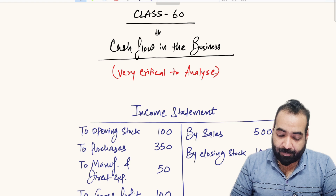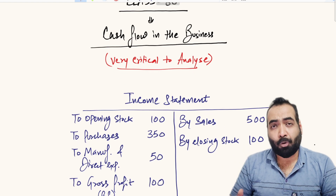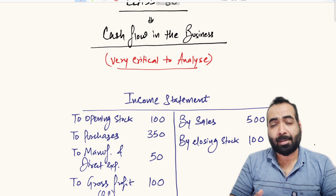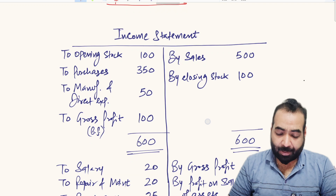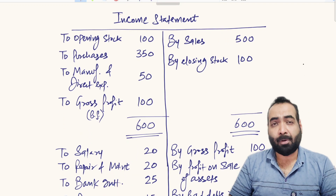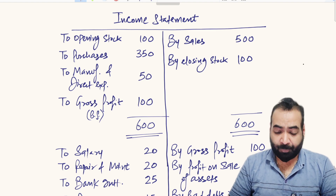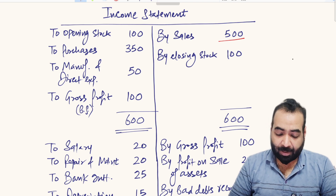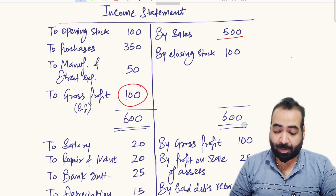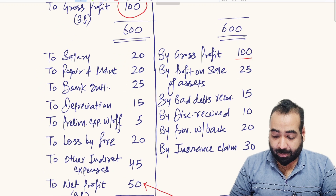Cash flow in the business is very critical to analyze, but how do we analyze it? Let us make a series of videos on this. Suppose this is your income statement — I will start from scratch, from a very basic level, so that you can understand it in as much depth as possible. The client has done sales of rupees 500 and earned a gross profit of rupees 100.